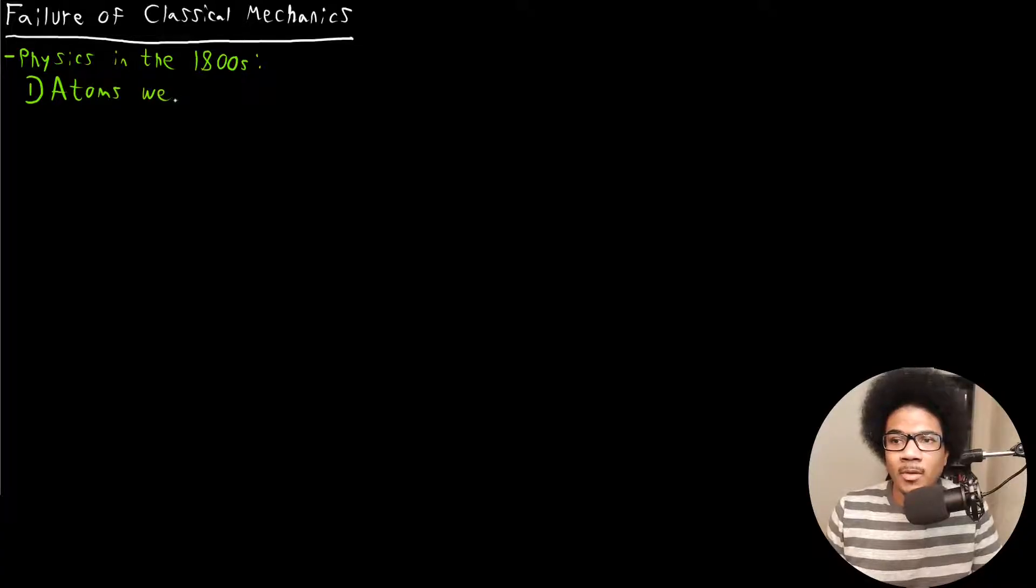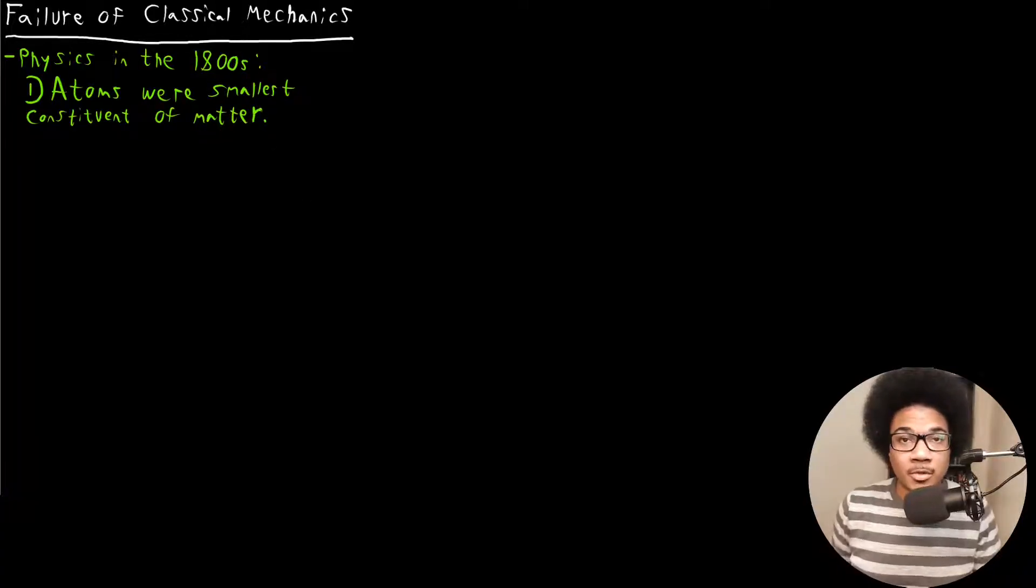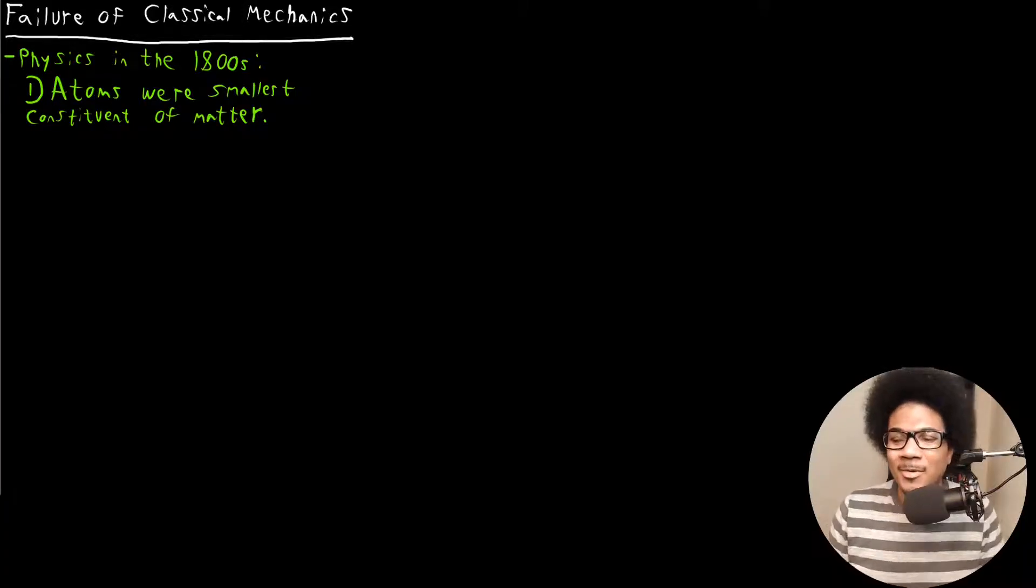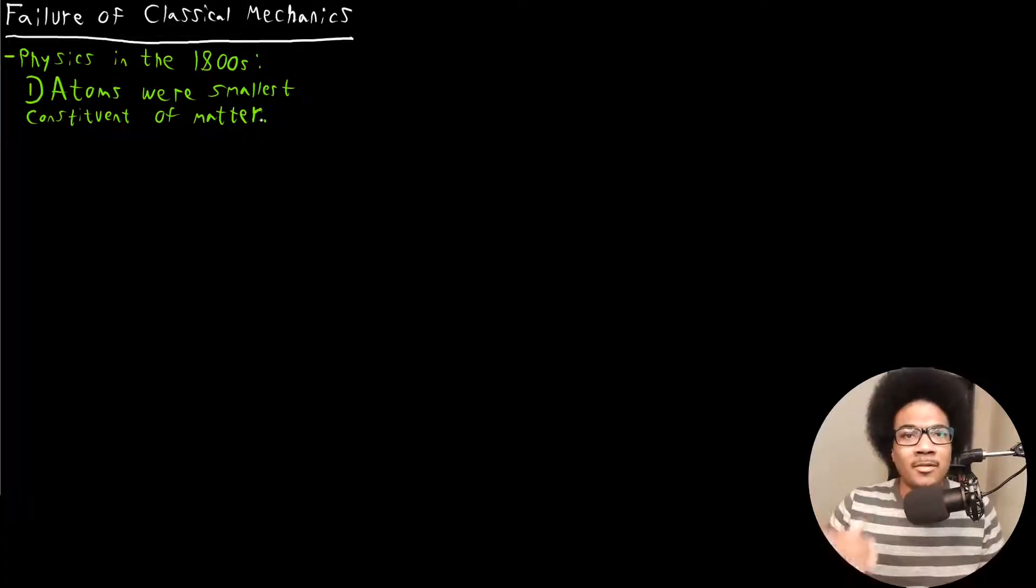Well, one of the things that was believed in the 1800s was that the atom was the smallest constituent of matter. So if you've spent any time in a chemistry classroom, you already know that this is not true. You know that there are electrons, neutrons, protons. We have subatomic particles, so the atom can't be the smallest constituent of matter. So we know that this is not true, but this was the prevailing physics of the 1800s, that atoms were the smallest building block of matter that we could envision or even theorize. So that was widely believed.